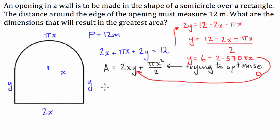So I'm going to get this function, and I'm going to plug it in for y there. So my result is going to be that I have an area function, which looks like this. We've got 2x, times, rather than writing y, I'm going to write 6 minus 2.5708x, close bracket, plus pi x squared over 2.